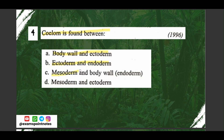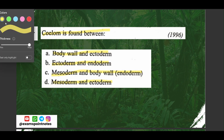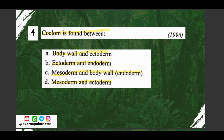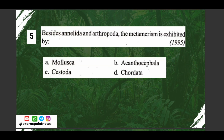Question number four: coelom is found between — options are: A) body wall and ectoderm, B) ectoderm and endoderm, C) mesoderm and body wall/endoderm, D) mesoderm and ectoderm. The correct option is option C, which is mesoderm and body wall (endoderm).